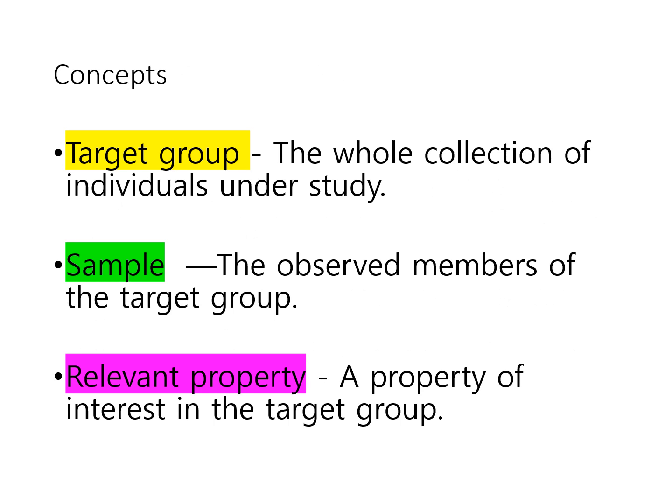Some concepts that are necessary to understand are the following. In any enumerative induction argument, you are going to have the target group, which is the whole collection of individuals under study. By individuals, we don't just mean people or agents, but it could be objects or cell phones or water samples or numbers. The second is the sample — that's the observed members of the target group. Since it's impossible or not feasible to study every member, we pick a sample to observe so that we can extrapolate for the entire group.